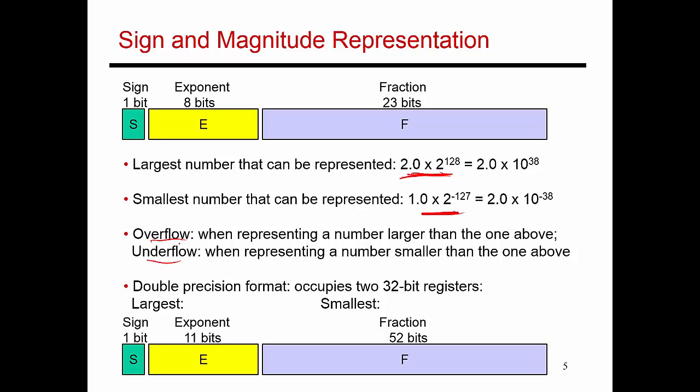If I do want to go beyond that range, then I need to use what is referred to as the double precision format. And this essentially uses two 32-bit registers to represent that value. So I'm using 64 bits. And like before, I use 1 bit for the sign, 11 bits for the exponent, and 52 bits for the fraction. And it seems like we've only increased the exponent by a small amount. But note that here I can represent numbers as large as 2 to the power 128. Here I can represent numbers as large as 2 to the power 1024. So this is actually much, much larger.